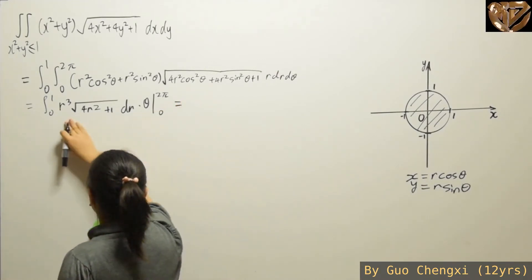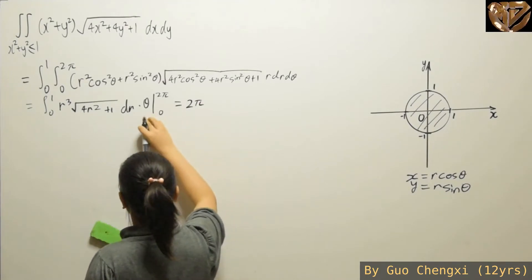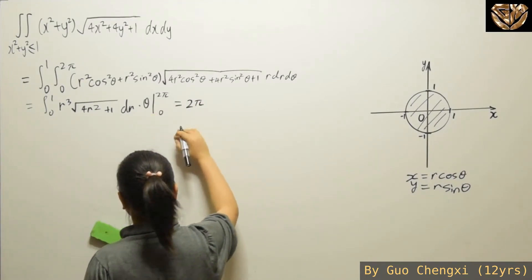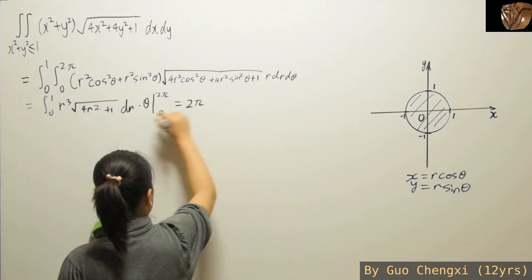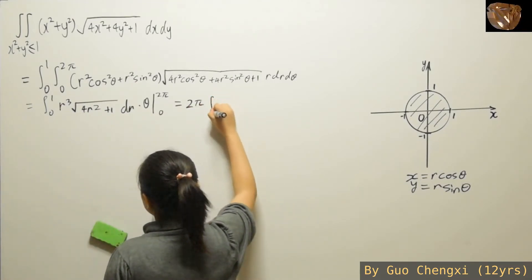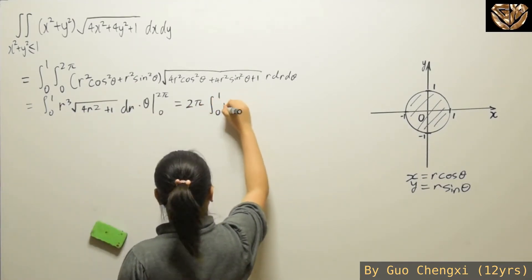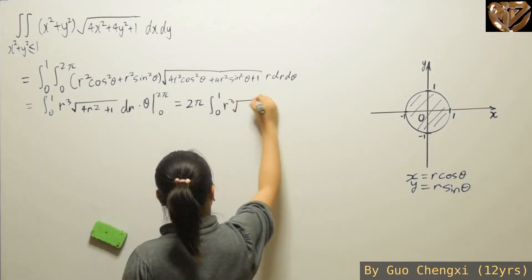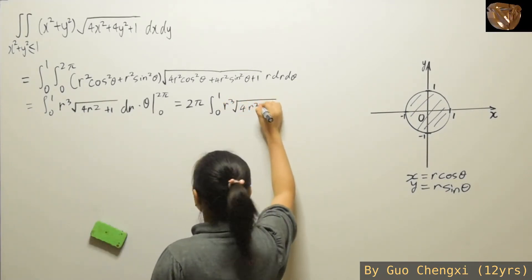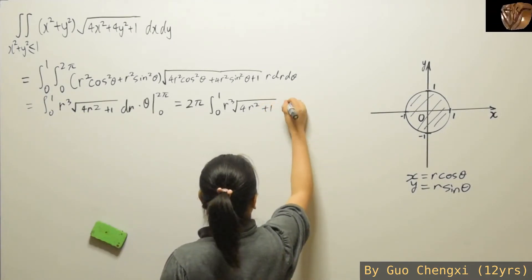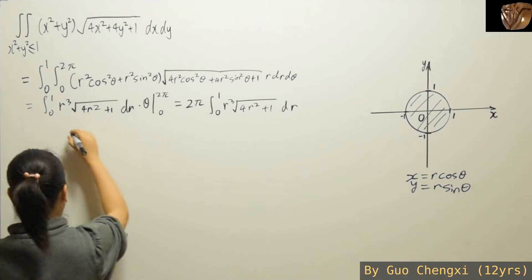For the θ integral, evaluating at θ = 2π gives 2π, while at zero it's just zero and can be ignored. So you get a factor of 2π out front. Right now it may seem like you cannot solve the remaining r integral anymore.